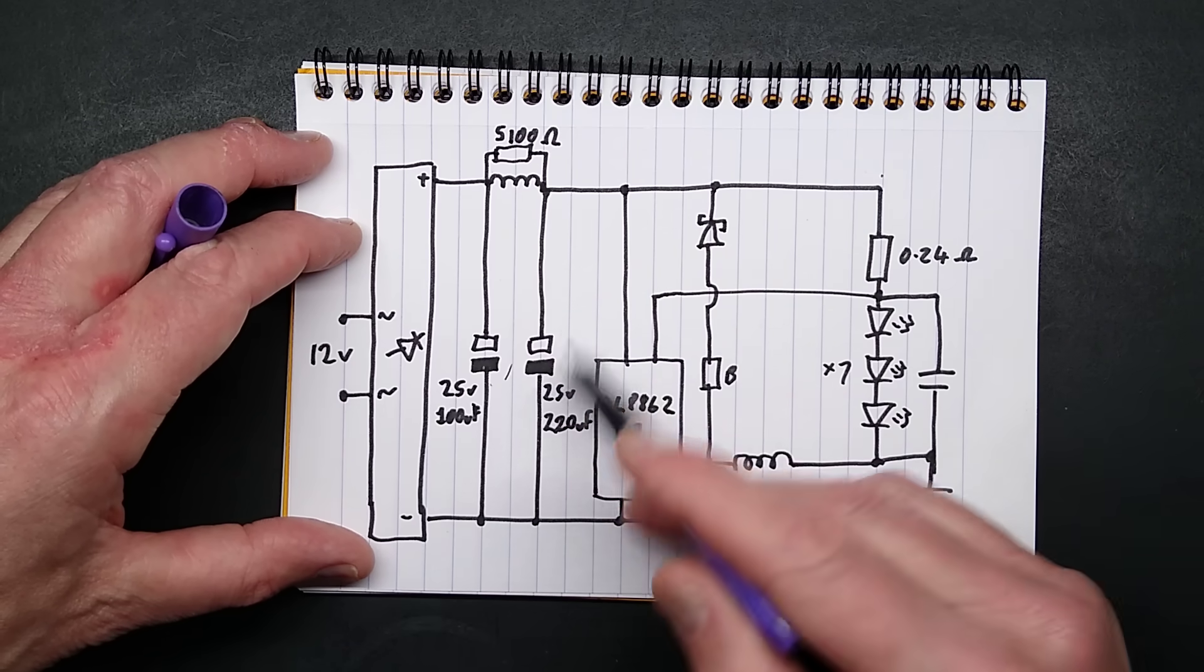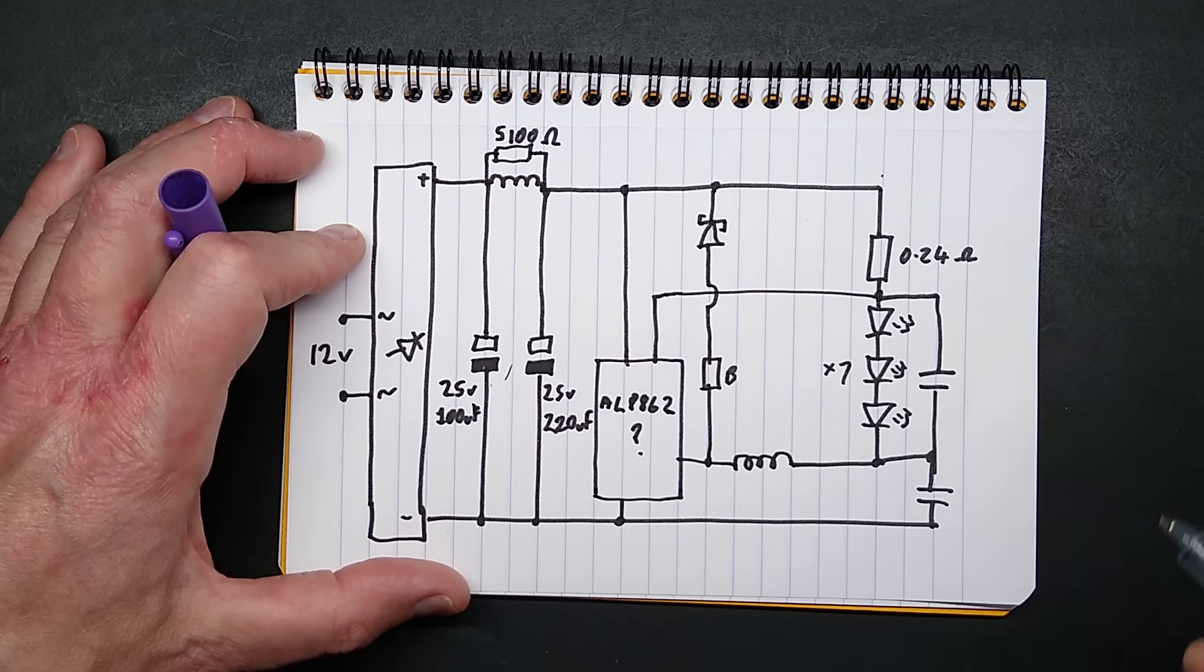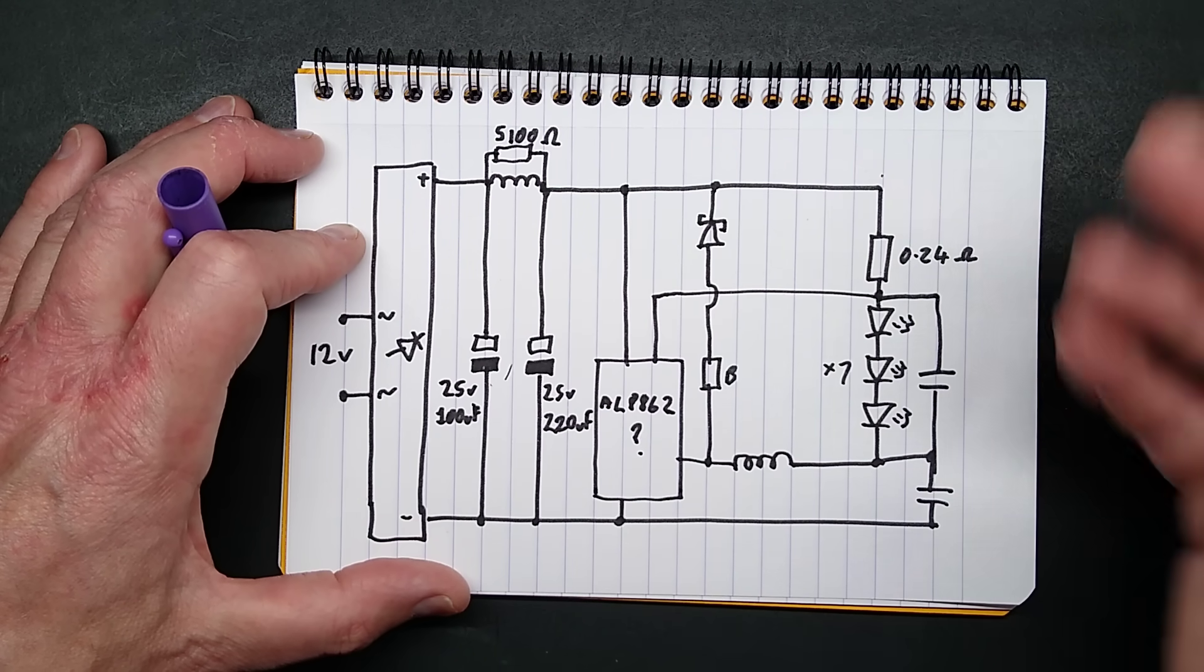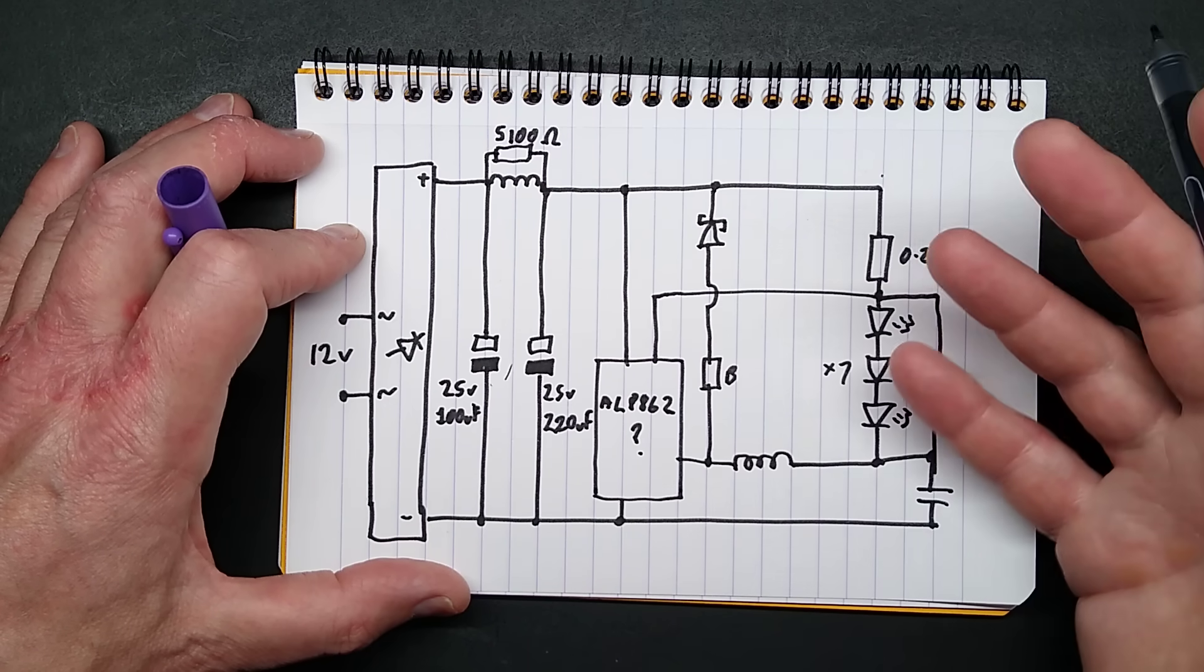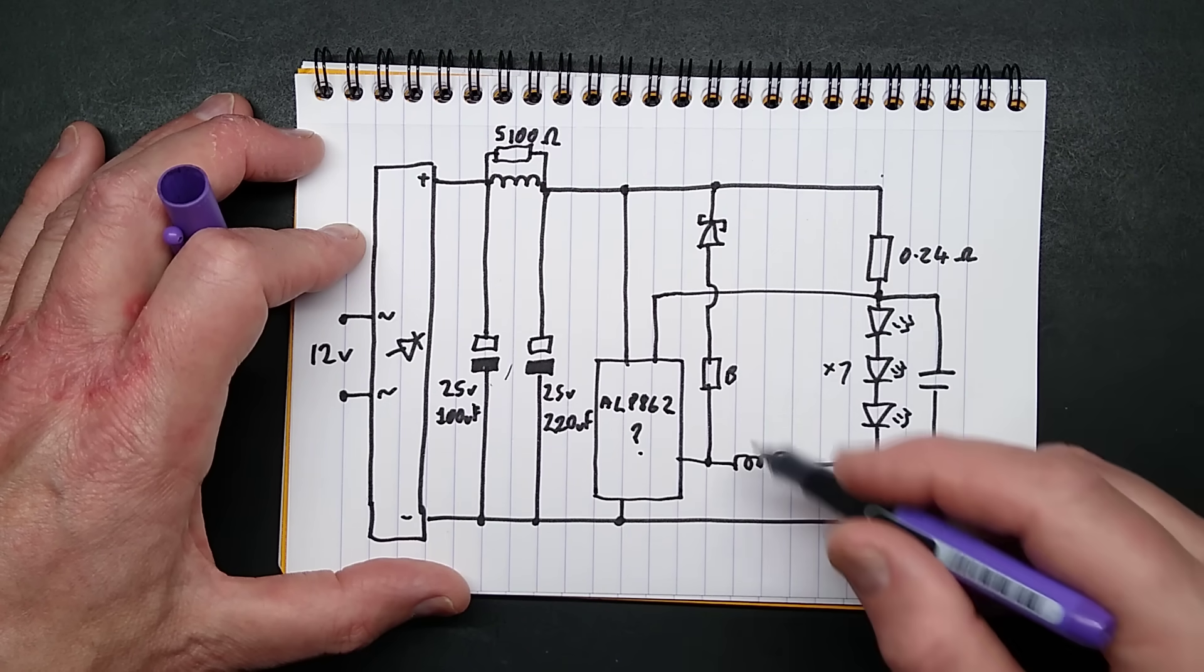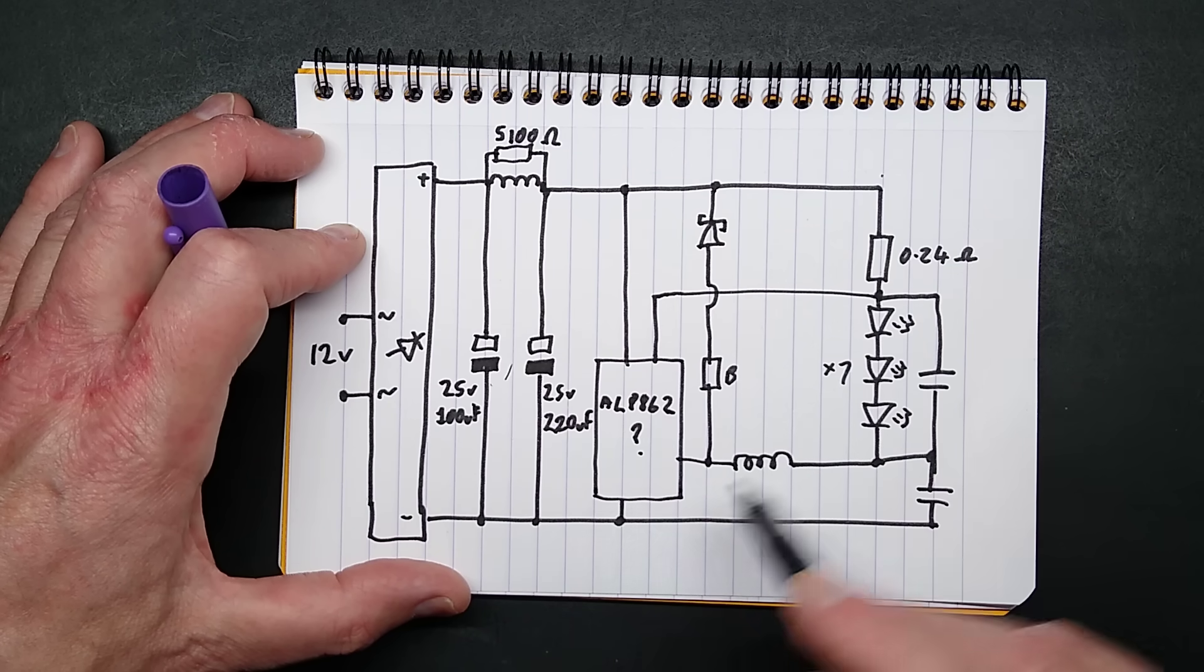Smoothing, filtering, more smoothing, and then this chip here, the AL8862. If it is that, every company seems to clone each other's products. Then normally I would expect things like a current sensor resistor to return to the zero volt rail. But in this case, it's actually going up to the positive rail.